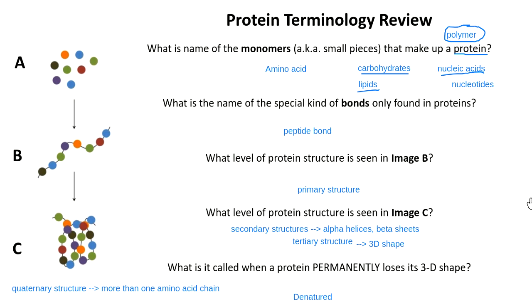There's a question in the chat: will quaternary structure always have four different amino acid chains? No — sometimes it's more than four, sometimes less than four. It's always at least two. As long as I have more than one amino acid chain, that's quaternary structure. Some proteins in the body are made of 20 or 30 different amino acid chains that all come together for complex functions.